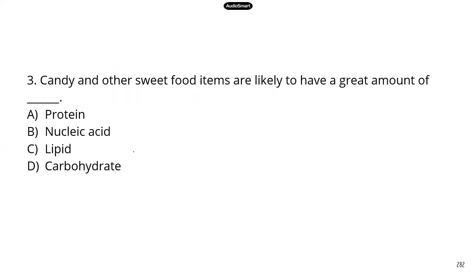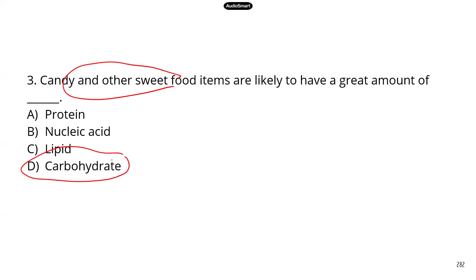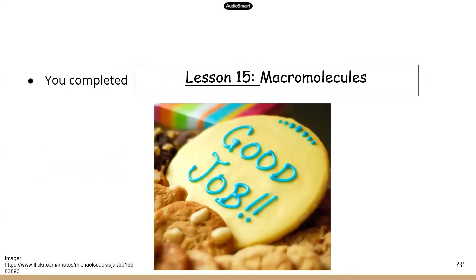Number three: candy and sweet food items likely contain a great amount of simple sugars. Simple sugars are carbohydrates — monosaccharides and disaccharides — and most of them are sweet, like glucose and fructose. All right, we finally finished the macromolecules lesson. I know it's taken a long time because there are four groups of macromolecules, but we finished it. Good job, and I'll see you in the next lesson.